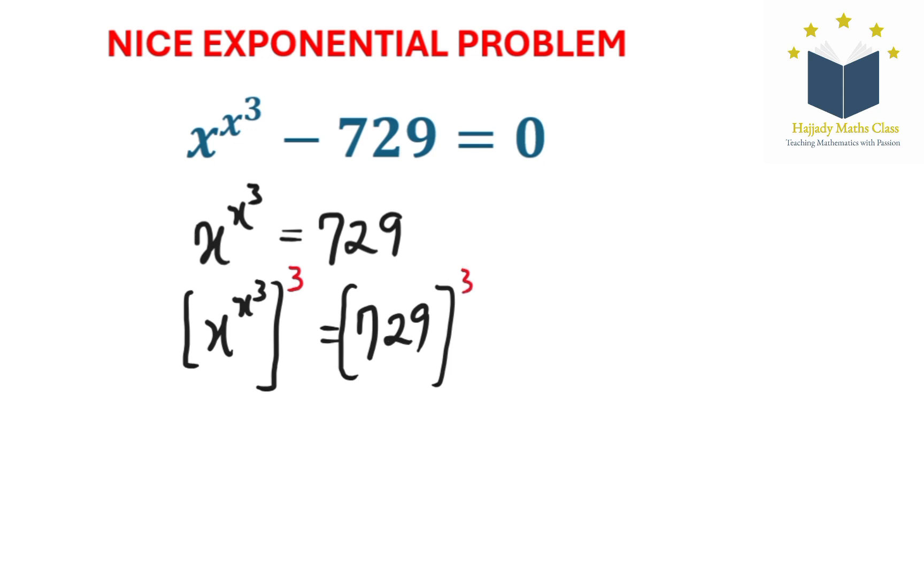Now rewriting my 729 here, I'm going to have x to the power of 3x to the power of 3 equal. 729 can be written as 9 to the power of 3 to the power of 3.